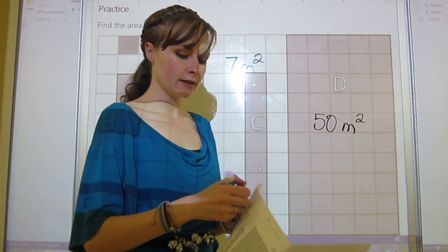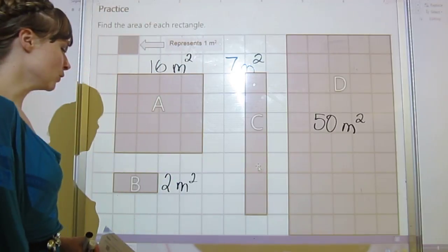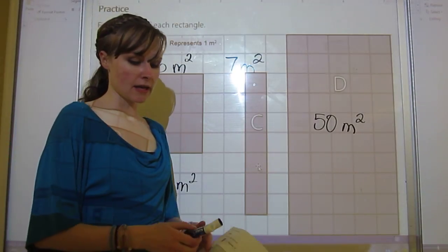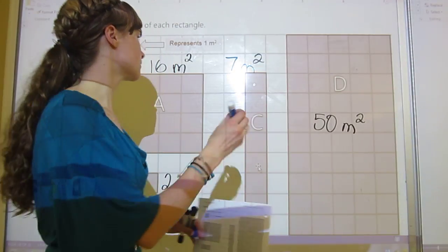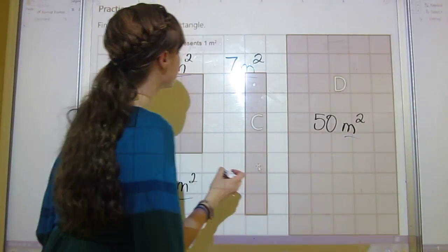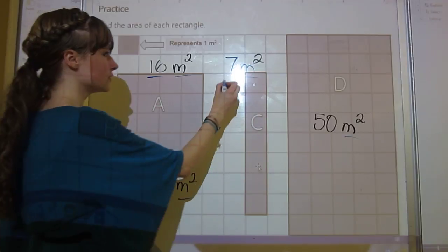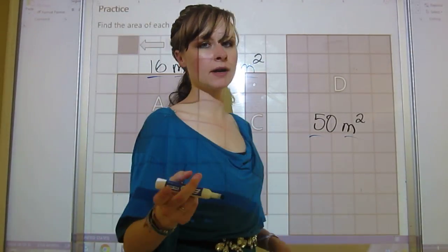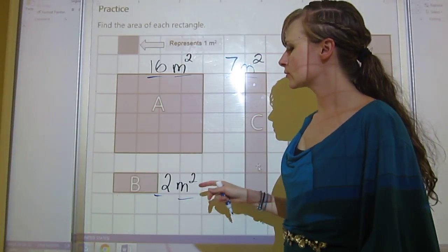If I was marking this on an assignment, this would be out of 8 marks. You would get 4 marks for writing meters squared, and you would get 4 marks for writing 16, 2, 7, and 50, like one mark each. So each one of these is worth 2 marks. Make sure you put those units.